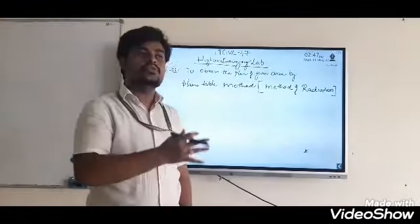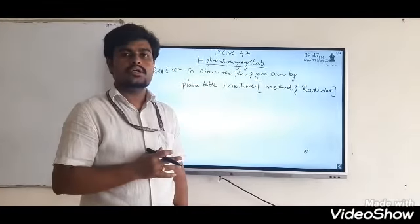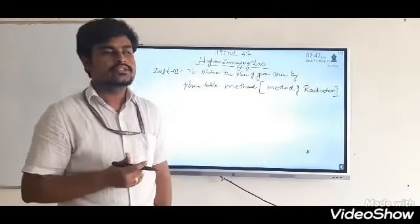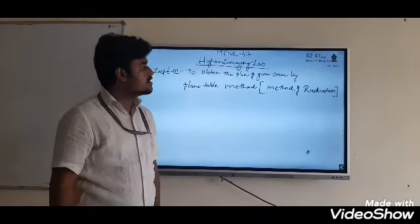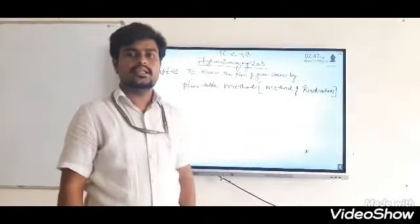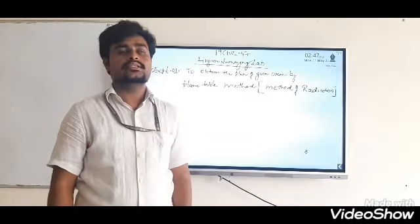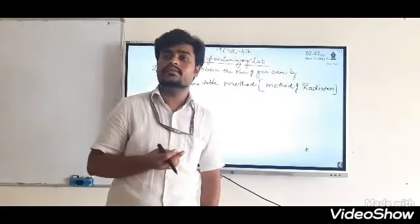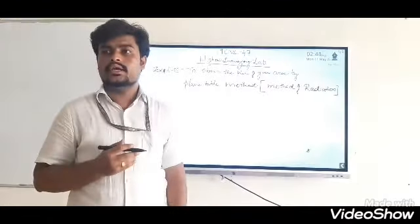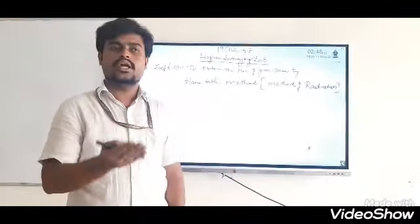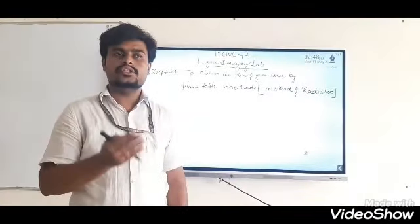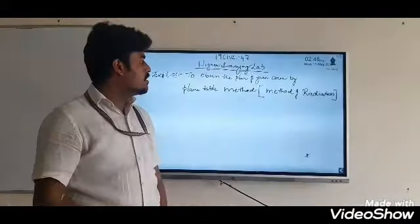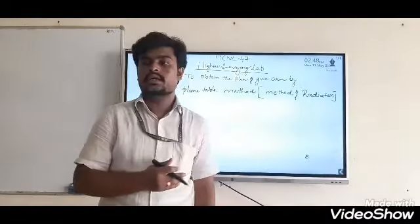This helps us to locate the points on the ground and to use those points for numerous calculations. To perform this method of radiation, the instruments we require are the plane table and its accessories. Accessories include alidade, trough compass, U-fork plumbob, spirit level, and a drawing sheet — we usually select A1 size drawing sheets to draw and perform the radiation method in the field.